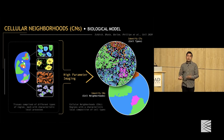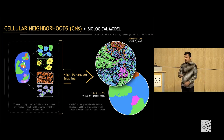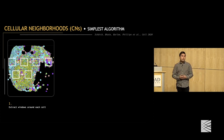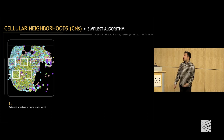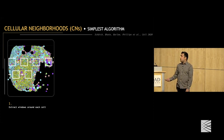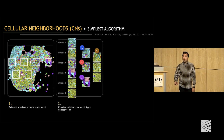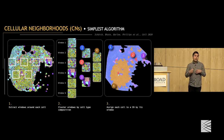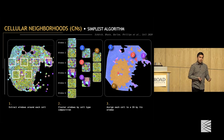To test whether this model is actually useful, we used the simplest possible algorithm to identify these neighborhoods. We extracted sliding windows around each cell, clustered them based on cell type composition, and then assigned each cell to a neighborhood — a CN — by the window it was found in. This is kind of the simplest possible thing you could do.